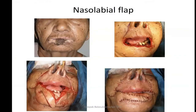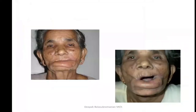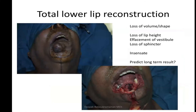The nasolabial flap can also be used for one-sided defects or total lip defects, but these tend to sag with time and the vertical height decreases. It is also a static reconstruction with no sling, and the oral commissure may not be as good as compared to a radial forearm with a palmaris sling. For total lower lip reconstruction requiring a dynamic result, we must consider loss of volume and shape, loss of lip height, absence of vestibule and sphincter, the insensate nature of any flap, and unpredictable long-term results.